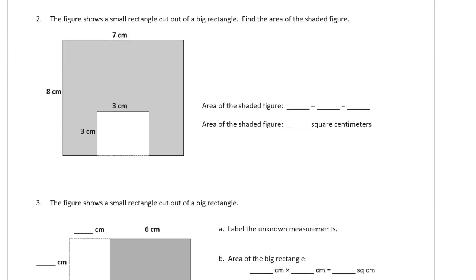Number two, the figure shows a small rectangle cut out of a big rectangle. Find the area of the shaded figure. So what we can do is this shows subtraction as a method for finding it, so that's what we're going to use. It's going to be, I'm going to use pink for this to outline this because it's harder to see the green. It's going to be the whole 8 by 7 rectangle with this 3 by 3 square subtracted out of it.